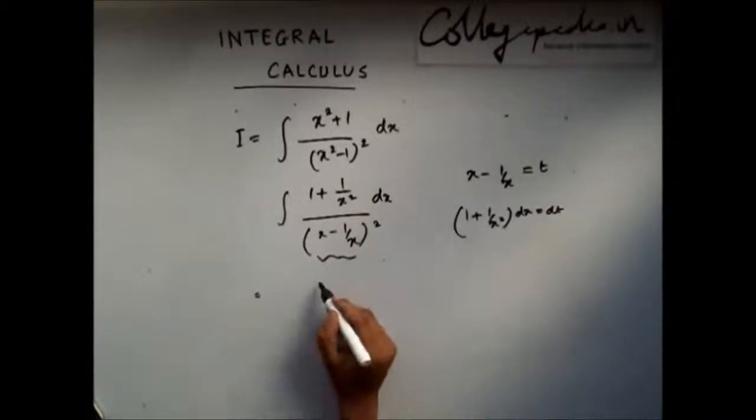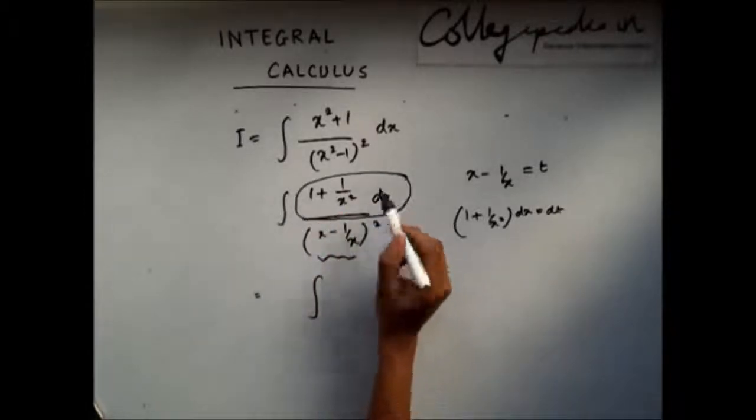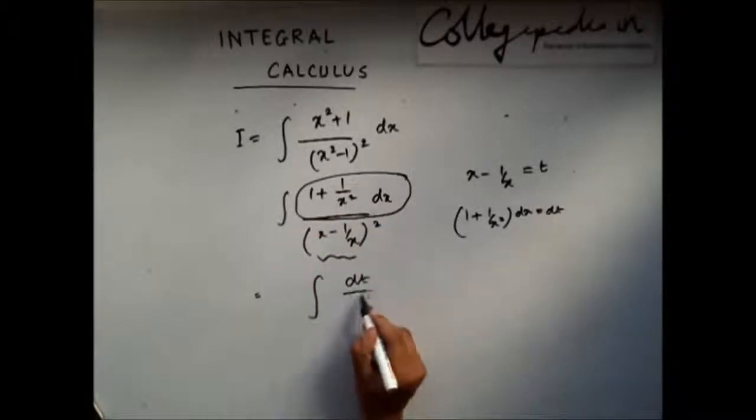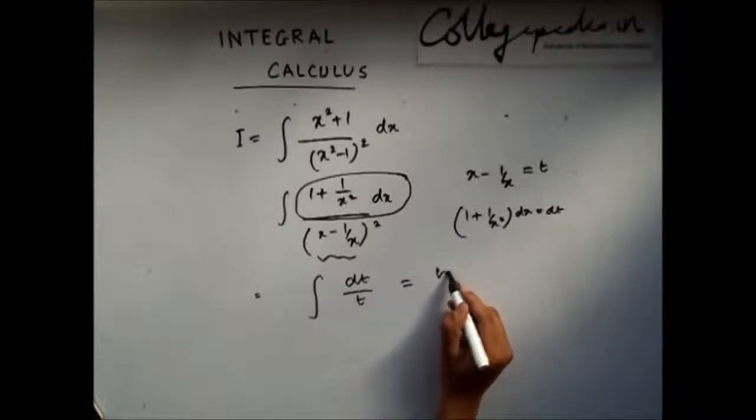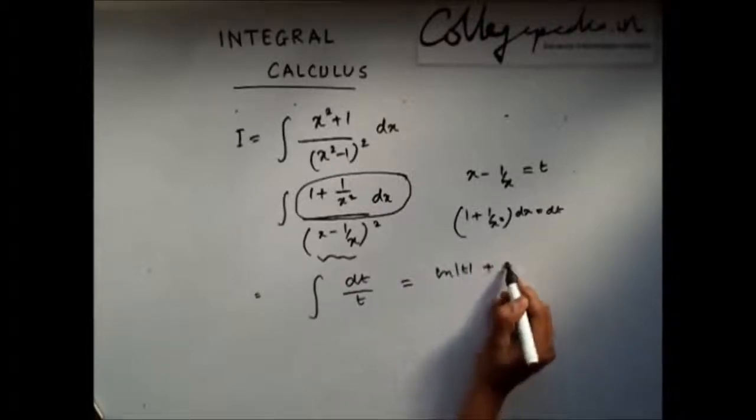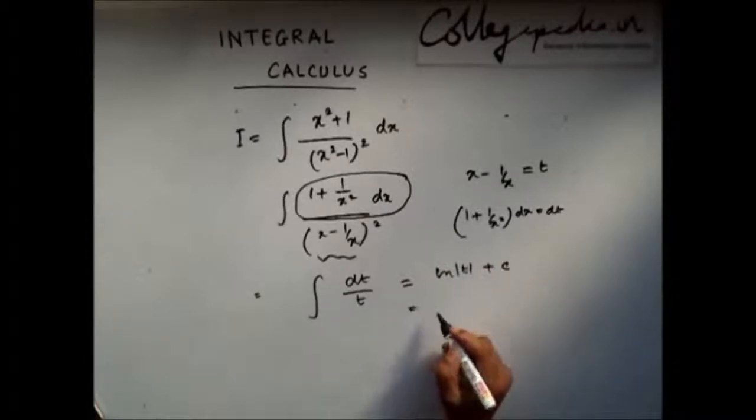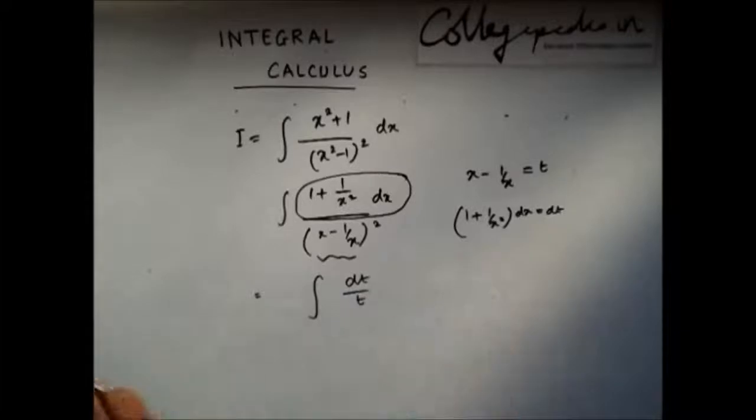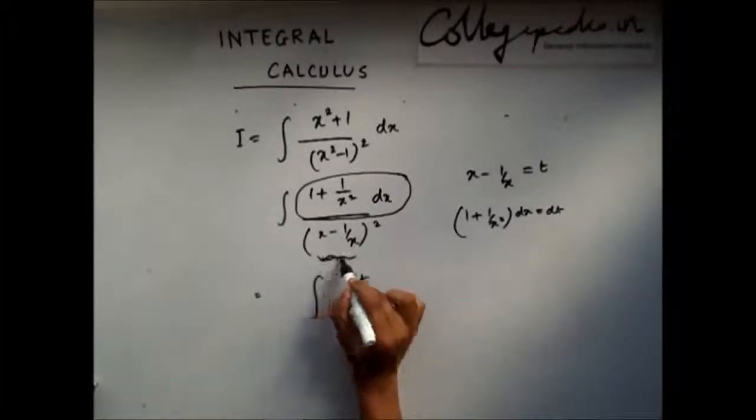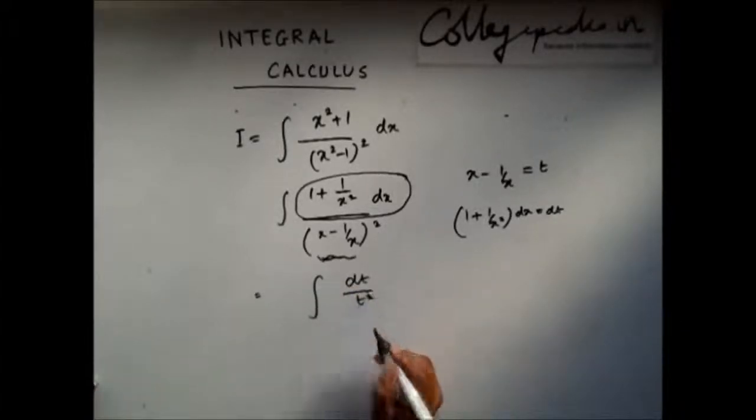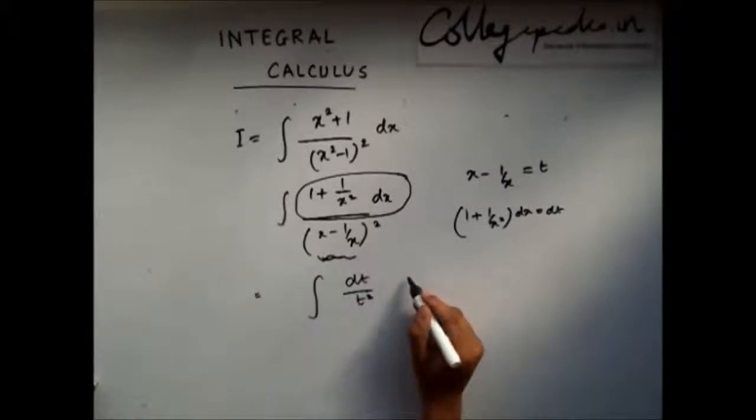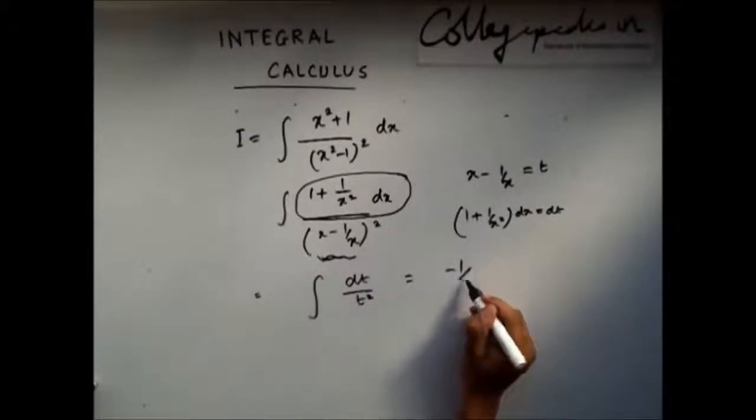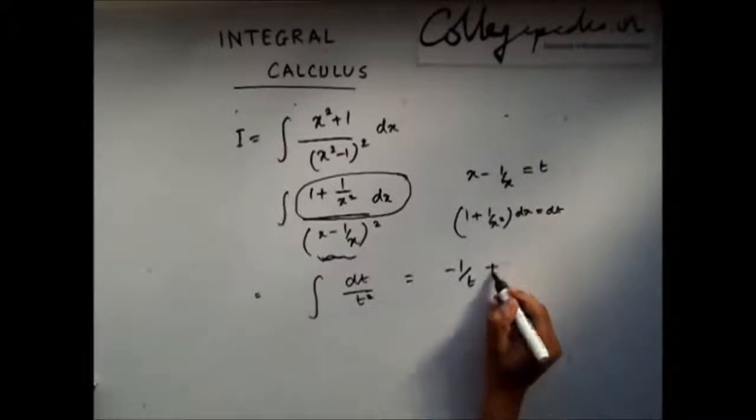Now replace, this becomes dt and this is t. It is ln of mod of t plus c. Sorry, I made a mistake here. This is t, so this is t square. Now if I integrate this, I will get minus 1 by t plus c.